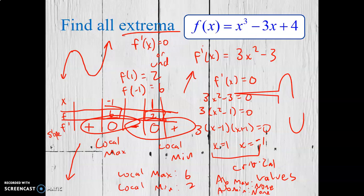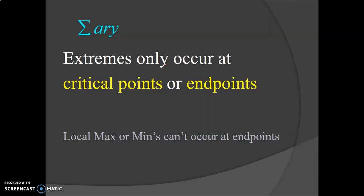To find extrema, you're looking at the first derivative — find where it's zero or undefined. Extrema will only ever happen at a critical point or at an endpoint. It doesn't have to be an extreme just because it's a critical point. For example, positive slope to zero slope to positive slope is not a max or a min — your slope has to switch from positive to negative for a max, or negative to positive for a min. Always check endpoints, because that's where your absolute max or min could happen.